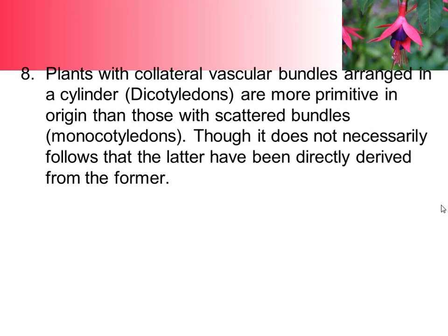Plants with collateral vascular bundles arranged in a cylinder, as in dicotyledonous plants, are more primitive in origin than those with scattered bundles as in the condition of monocots, though it does not necessarily follow that the latter have been directly derived from the former.